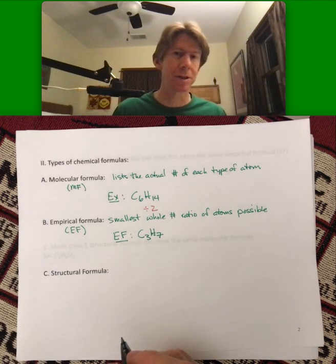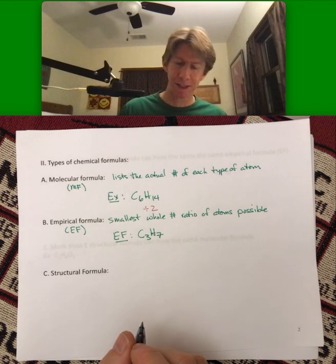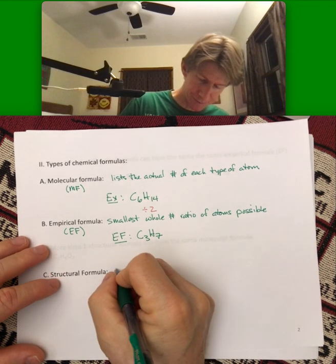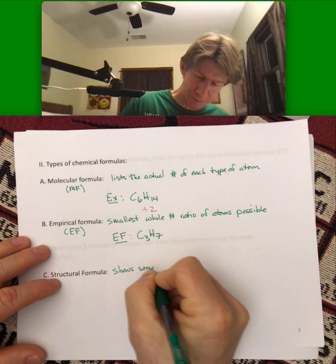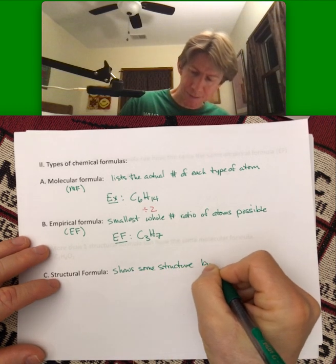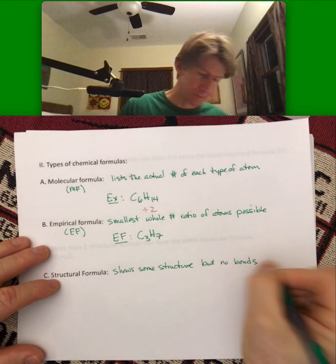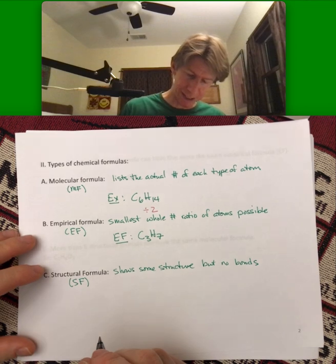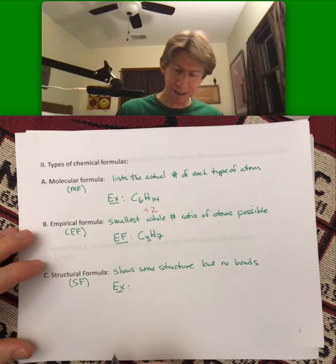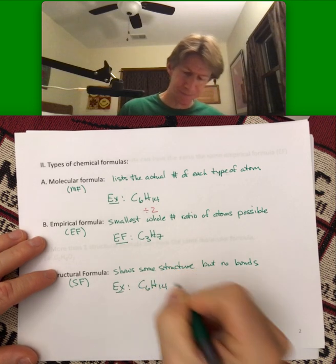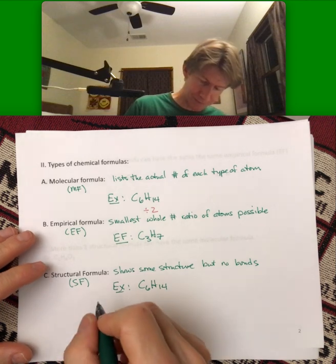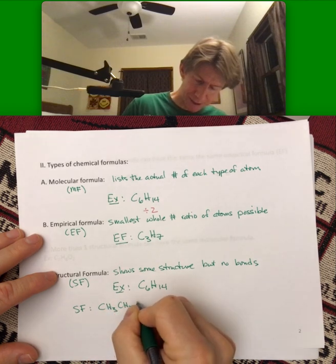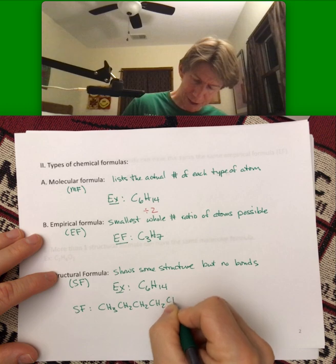That is the empirical formula. There's no smaller whole number ratio that will work. The structural formula is going to show some structure but no bonds, and its abbreviation is going to be capital SF. For example, C6H14 could be, a structural formula would be CH3-CH2-CH2-CH2-CH2-CH3.